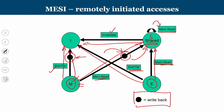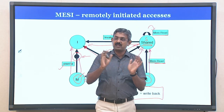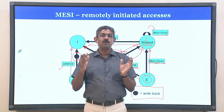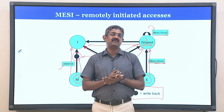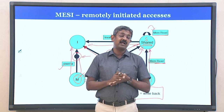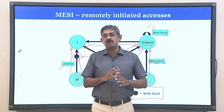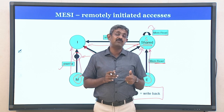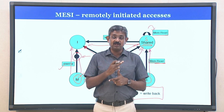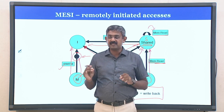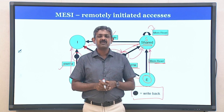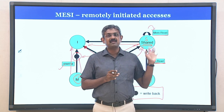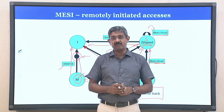To summarize the state transitions: two types exist — those based on local processor requests (previous diagram) and those based on observed bus activity (snooping diagram). The cache controller decides state transitions depending on read or write requests — hit or miss — from the local processor, issuing bus transactions as needed. When bus transactions from other processors are snooped, the cache controller may also change state and sometimes perform a write-back.